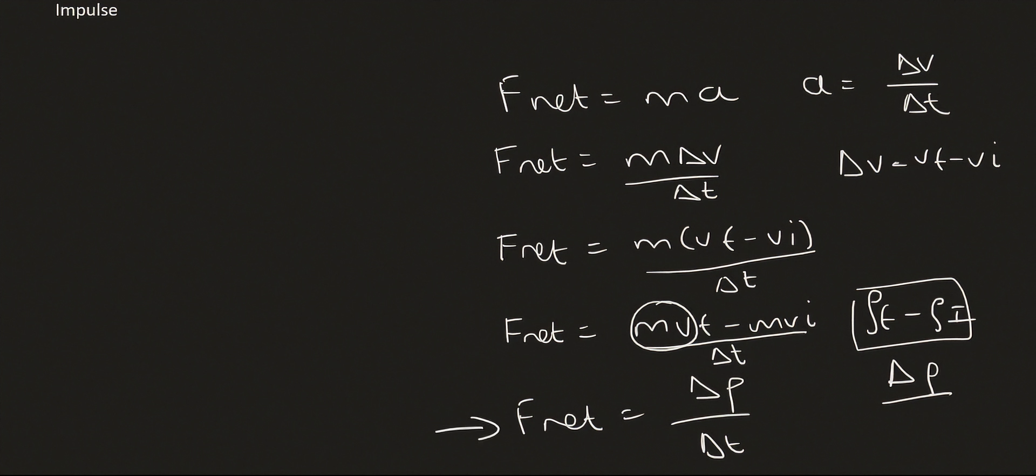That is Newton's second law in terms of momentum. Then if we had to take that equation which I'm just going to write over here and get the time to the left hand side, how would you do that? Well, you would multiply by time. And so you'd end up with F net delta T equals change in momentum.